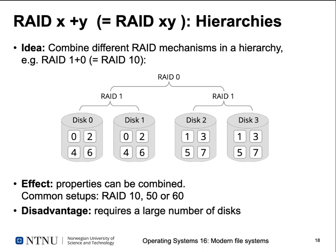RAID levels can be combined — for example RAID 10 combines RAID 1 mirroring with RAID 0 striping, and RAID 50 or 60 combines RAID 5 or 6 with RAID 0. These combinations merge properties of read throughput and reliability but require a large number of disks, making them appropriate only for very large systems or systems with special requirements.